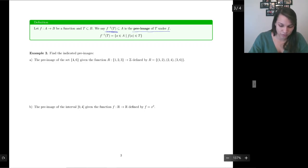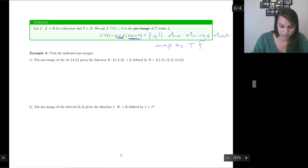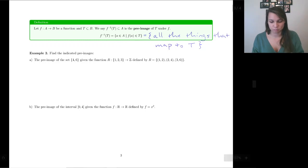We call this the pre-image of T under F. And what this means is all the things that are going to map to the set T. So all the things where they got mapped to T. So those are the English words that go with that. And I feel like that's much less scary than this notation.